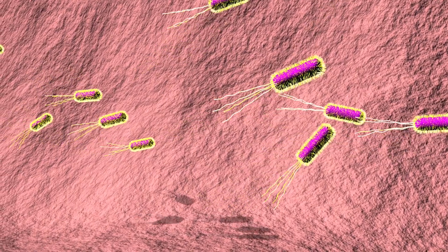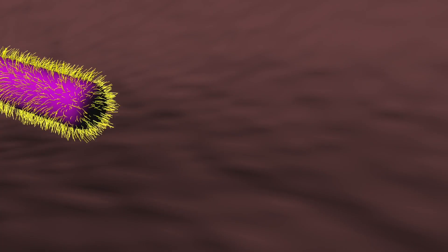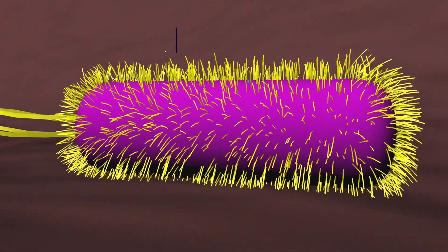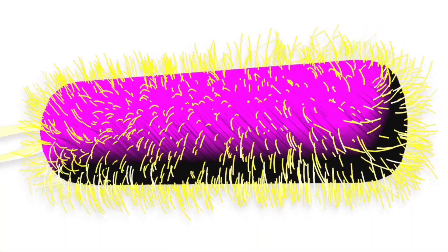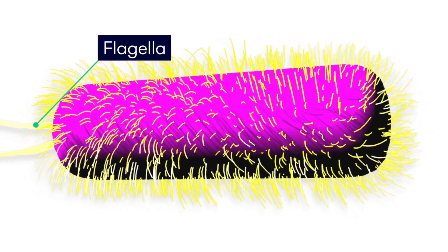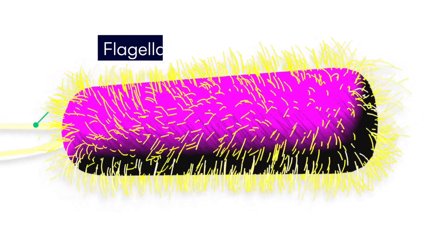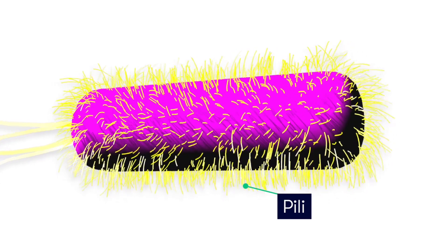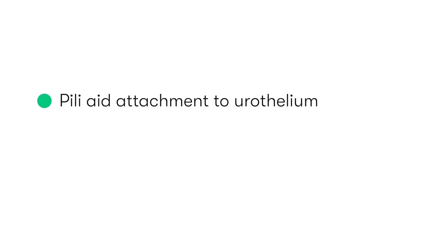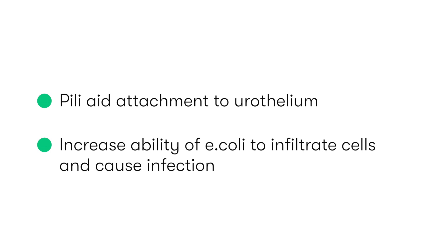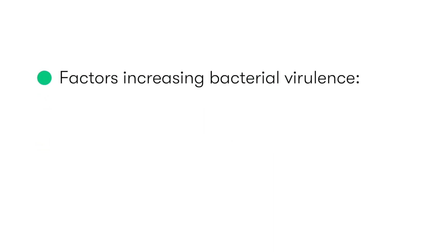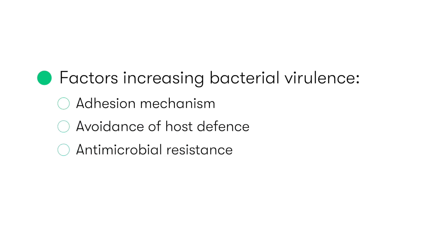The most common bacteria that can lead to urinary tract infections and pyelonephritis is E. coli — a gram-negative anaerobic bacteria typically found within the lower intestines. E. coli are rod-shaped, and some strains have flagella, which are tail-like projections that allow them to move. Importantly, the body of E. coli is surrounded by pili, which aid attachment of the bacteria to the urothelium, increasing the ability of E. coli to infiltrate cells and cause infection. Other factors increasing bacterial virulence include the ability to avoid host defenses, resistance to antimicrobials, and a diminished host response — for example, in patients with an immunodeficiency disease.